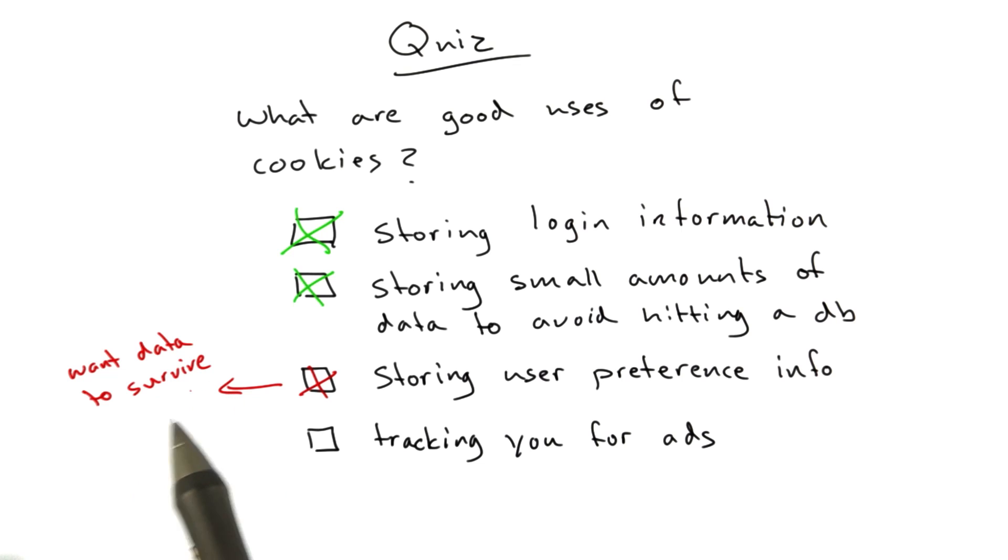A user can change browsers. They can go to a different machine. And the cookies are specific to one browser and as long as the user allows them to be there. So data like user preferences that you want to exist until a user changes it on your website shouldn't be stored in cookies.